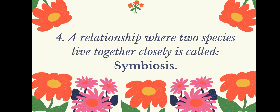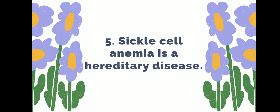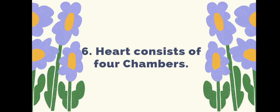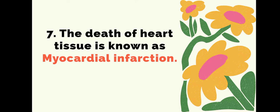A relationship where two species live together closely is called symbiosis. Sickle cell anemia is a hereditary disease. The heart consists of four chambers.